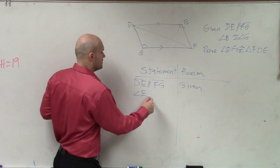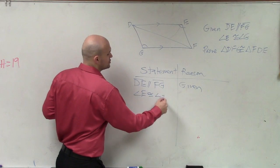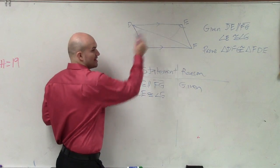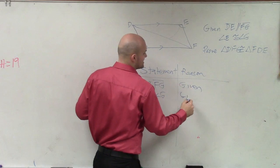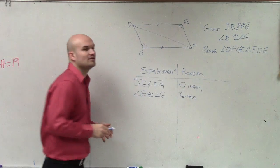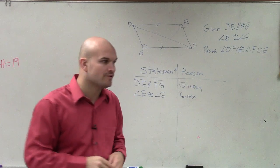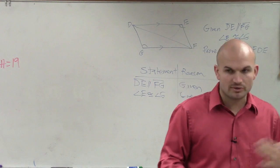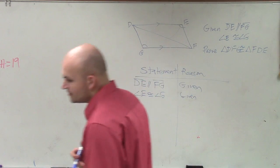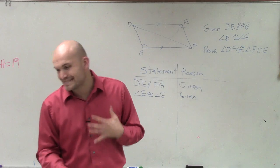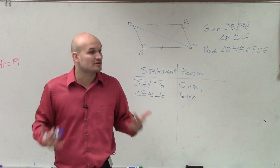The next one is angle E is congruent to angle G. So you can see that these two angles are congruent to each other, again, because that's given. But what they're asking us to do is to prove a triangle is congruent to another triangle. Now, in this homework, we only practice angle-side-angle and angle-angle-side.